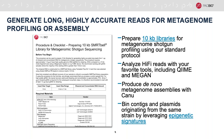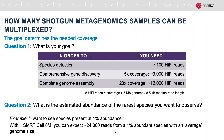Before doing a shotgun metagenomics experiment, consider the goal of your study. Are you interested in detecting all species present, doing comprehensive gene discovery, or doing complete genome assembly? We recommend just 100 Q20 HiFi reads for species-level detection, at least 3,000 reads (approximately 5-fold coverage) for gene discovery, and 12,000 reads (approximately 20-fold coverage) for complete genome assembly. These are the coverages per species.